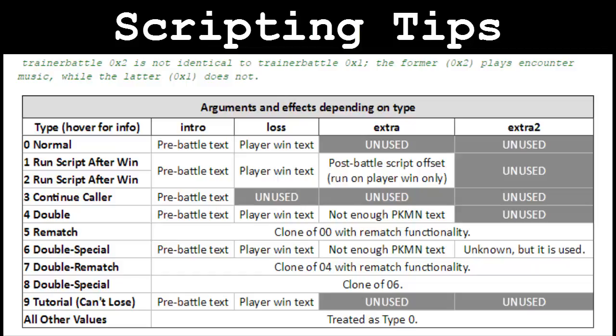The first tip deals with trainer battles. When I went over trainer battles, I mostly talked about Type 0x0 and Type 0x1, since they're the most frequently used. If you took the time to read through the chart shown on screen, you might have noticed that Type 0x9 functions as FireRed's tutorial battle with your rival in Professor Oak's laboratory. If the player loses this battle, he or she will not be sent back to the last visited respawn point — the script will just continue as usual.